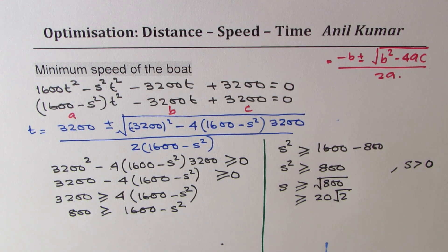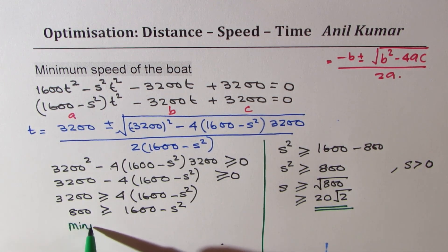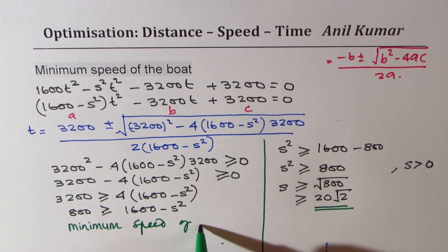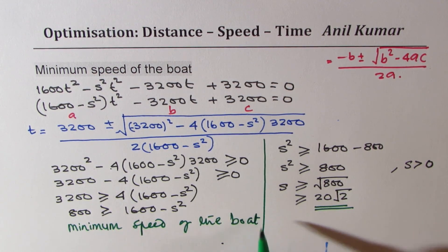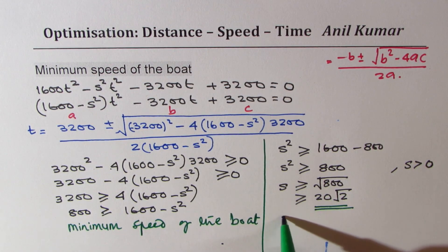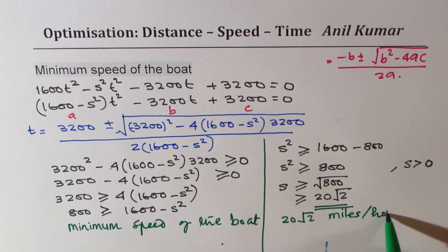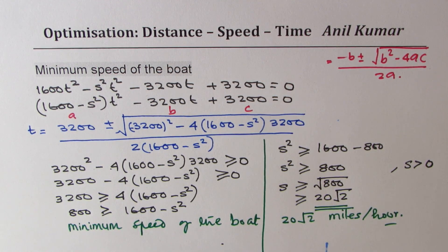So that becomes the speed. From here clearly, what we get is the minimum speed could be 20 square root 2 miles per hour. That becomes the solution of this particular question. I hope the steps are absolutely clear. Feel free to write your comments and share your views. If you really like and subscribe to my videos, that would be great.